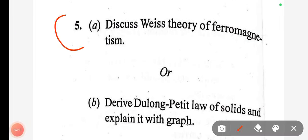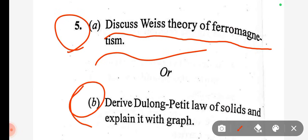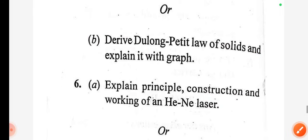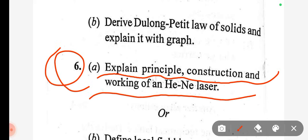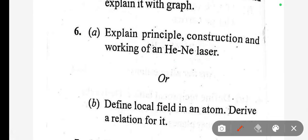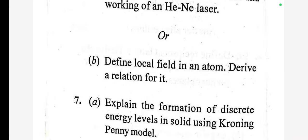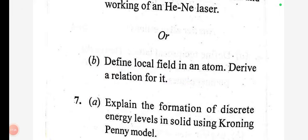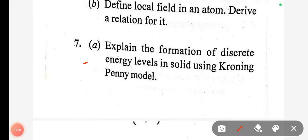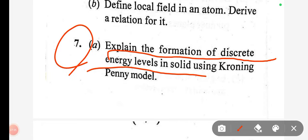Discuss the theory of ferromagnetism, then derive the Dulong-Petit law for solids and explain it with a graph. Explain the principle, construction, and working of a HeNe laser. Define local field in an atom and derive a relation for it. Explain the formation of discrete energy levels in solids using the Kronig-Penney model.